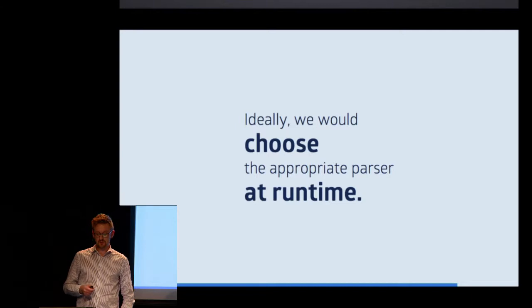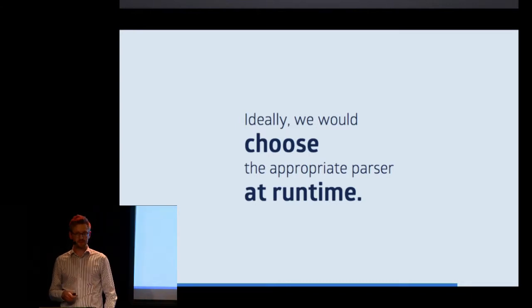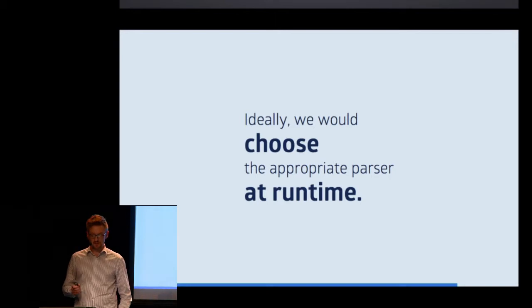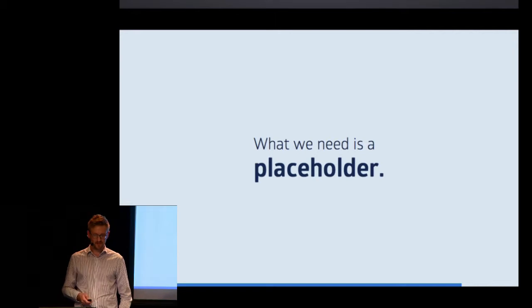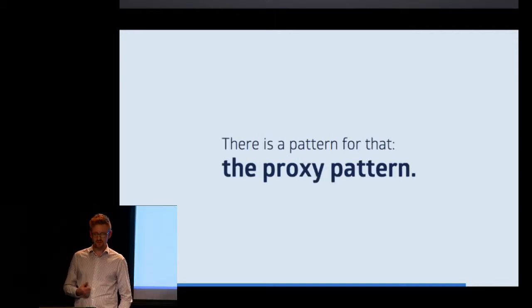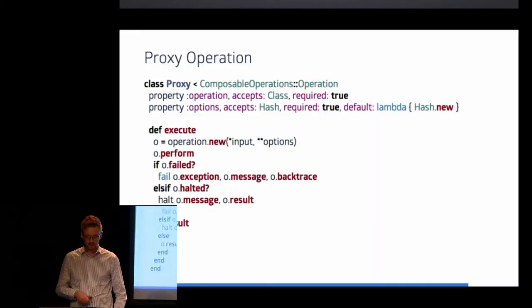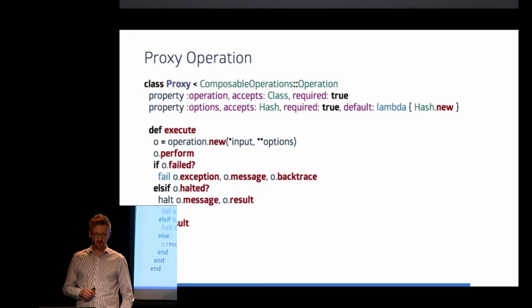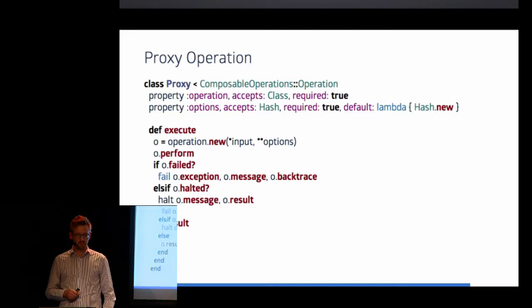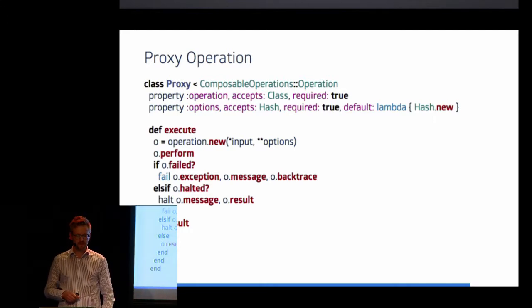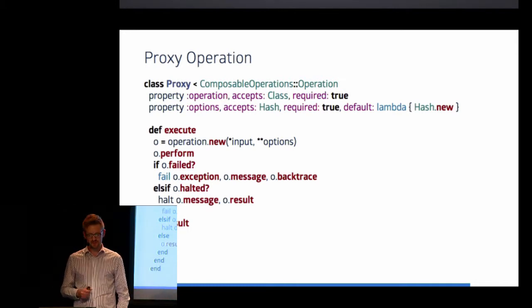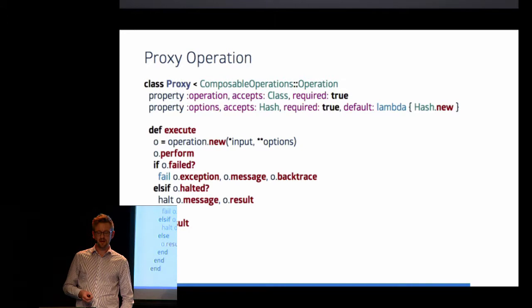What we ideally would do is choose the parser at runtime, so that we can decide whether we want to parse JSON or CSV. And for that, we need a placeholder. And again, we can combine the idea of a transaction script with another pattern, because there's a pattern for implementing placeholder, and that is the proxy pattern. A proxy operation could look like this, where we build an operation that accepts as its own input an operation and options that it is then going to forward to the operation. And when the proxy is executed, it simply instantiates the operation, then performs it, and then clones the state. So it basically takes the state of the operation it wrapped and provides this back to the pipeline that was calling the proxy operation.